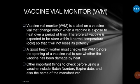If the VVM is in stage three or four, you must discard the vaccine. If it is in stage one or two, you can use it — the vaccine is still okay. Other important things to check before using a vaccine include the batch number, expiry date, and the name of the manufacturer.